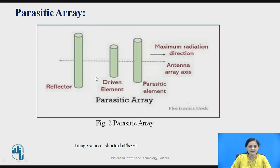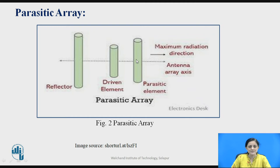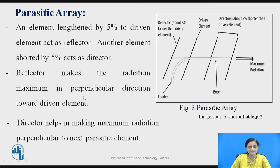This figure shows the parasitic array antenna. The first one is the reflector, the middle one is the driven element placed at the center, and on one side are the parasitic elements called directors. The number of directors can be increased depending on the application. In this direction, maximum radiation is possible using the directors, and this is the antenna array axis. In the broadside antenna, the major lobe is observed perpendicular to the antenna array axis. The reflector is used to reflect the signal in an undesired direction.